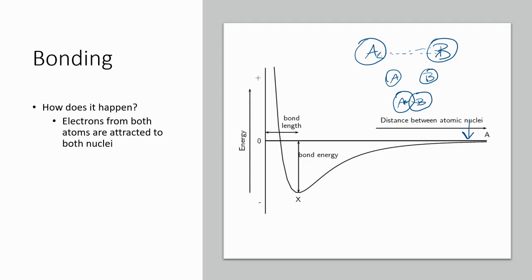At this point, they are at point X on this energy curve where their energy is very low. The lower the energy, the more stable the situation. So when the atoms bond and form that energy low, they're very stable, and this is the preferred state. We have to follow the law of conservation, so this energy that was released goes somewhere — it's released out into the world, and that is why reactions sometimes feel hot, because when those bonds are formed and release energy, we sometimes feel it as heat.